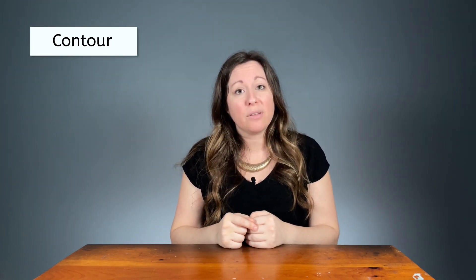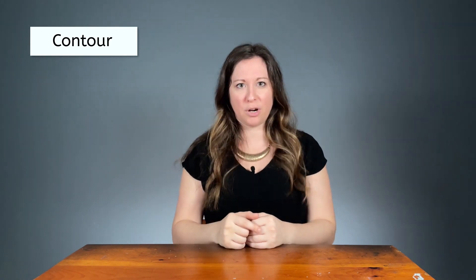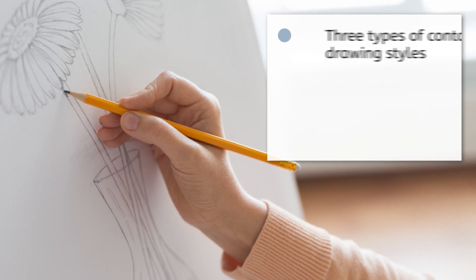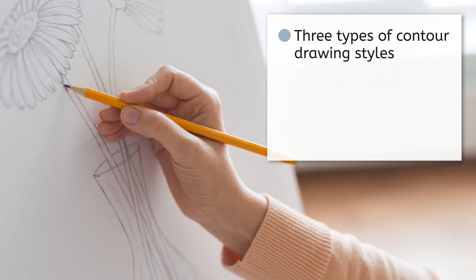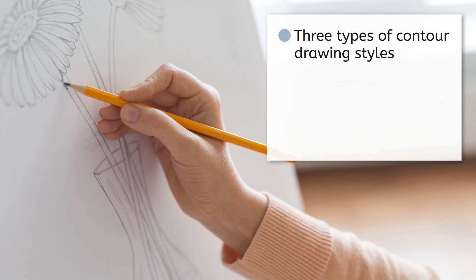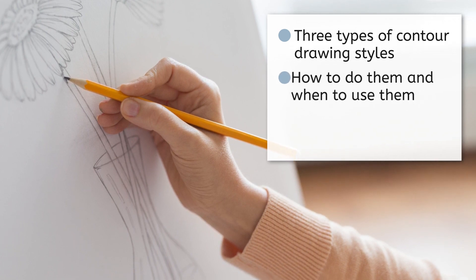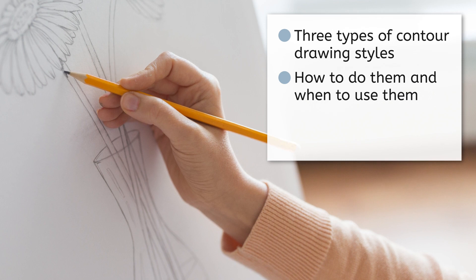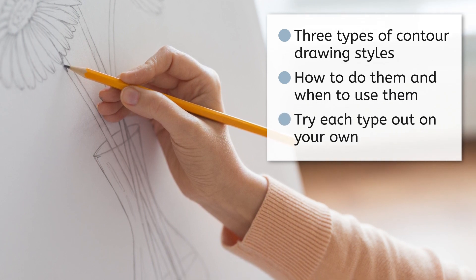The images you see in a coloring book have a real art term: contour. In this lesson we are going to learn about three types of contour drawing styles — contour, blind contour, and cross contour — how to do each type and when to use them, and then allow you to try out each type on your own.